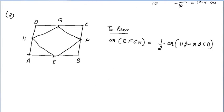Once again, revising the next question. We have ABCD as a parallelogram, and E, F, G, H are the midpoints of the respective sides. When we join these midpoints, we get another quadrilateral EFGH.